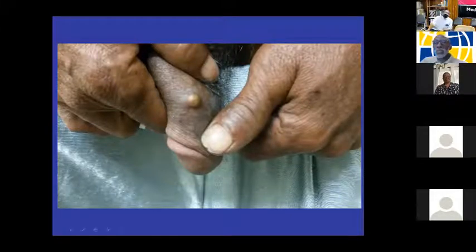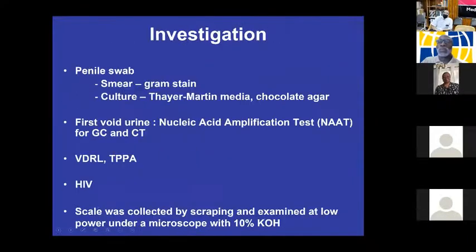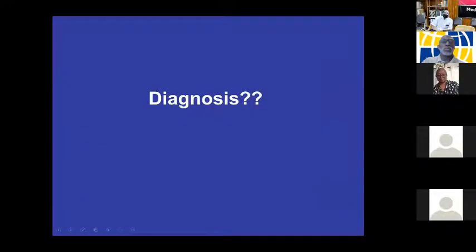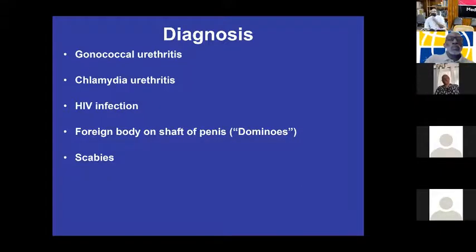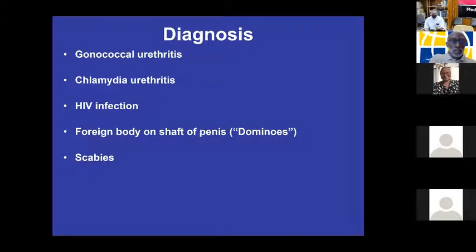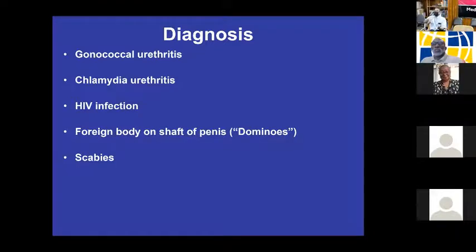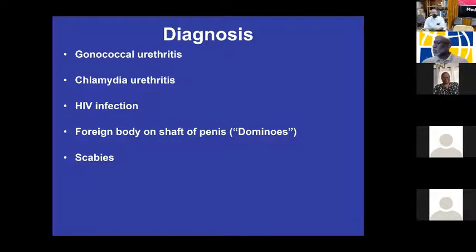The diagnoses: gonococcal urethritis, chlamydia urethritis, HIV infection, and the foreign body is called a 'domino.' What they do is — they go to prison and they file down domino pieces into little balls. They make a slit in the penis with a razor blade, no anesthetic, and insert the domino. And of course he also had scabies.